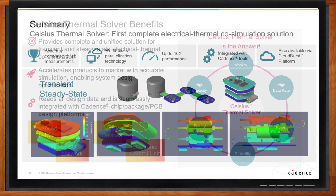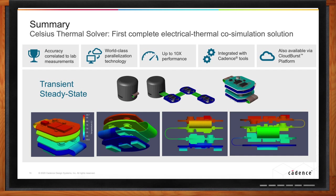Can you recap your main points? This picture shows an example from Allegro — a complex PCB connected with rigid-flex connections. You cannot solve it using traditional two-dimensional layer structure; it has to be 3D. We achieve this 3D resolution and provide up to 10x performance without losing accuracy. Most importantly, we integrate with Cadence tools so current Cadence customers can solve their electrical-thermal problems effectively. We also provide these tools on the cloud platform as part of providing our industry and customers with a complete electrical-thermal co-simulation solution.